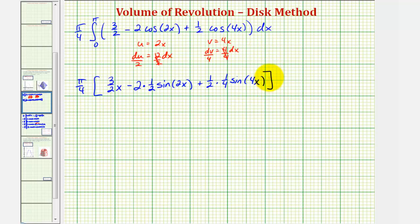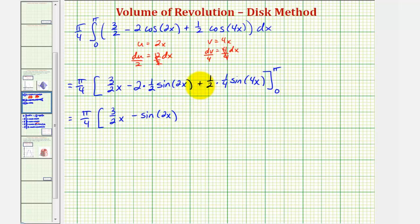The limits of integration were from zero to pi. Let's simplify this one more time. So we have three-halves x, minus sine two x, and plus one-eighth sine four x.